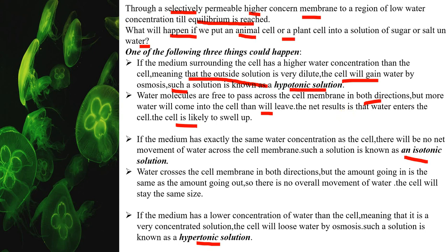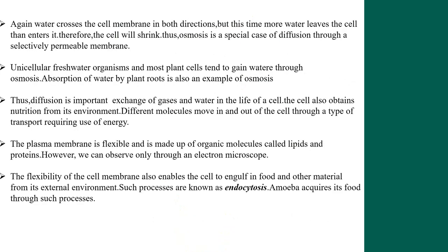In an isotonic solution, the concentration of water is equal on both sides, so there is no net movement of water. The cell's size and shape will not change. In a hypertonic solution, the water content outside is less, so more water leaves the cell than enters it. Therefore, the cell will shrink. Thus, osmosis is a special case of diffusion through a selectively permeable membrane.